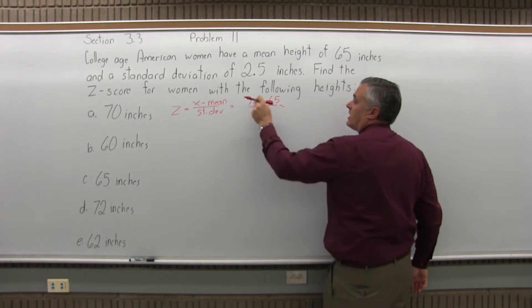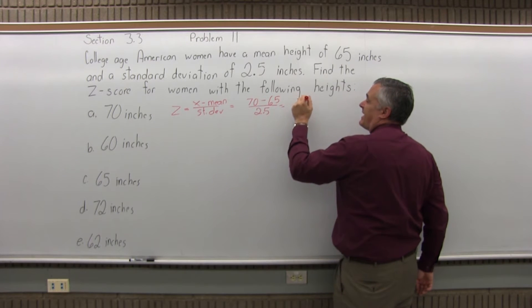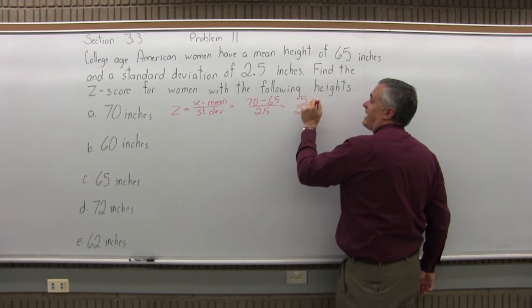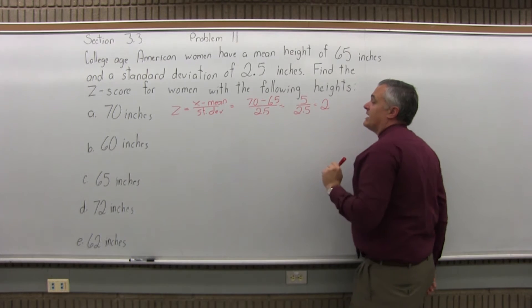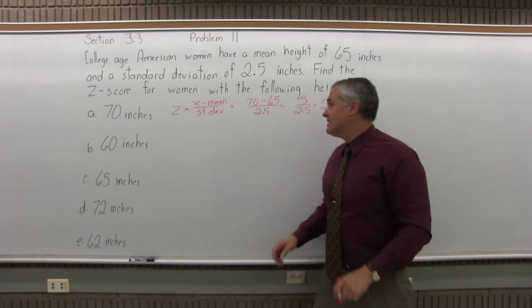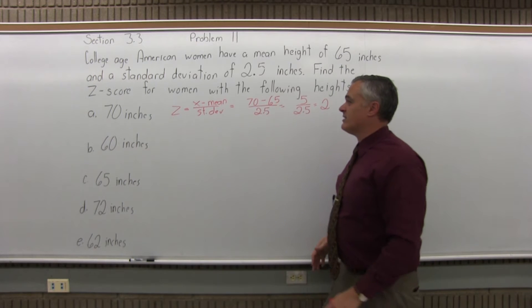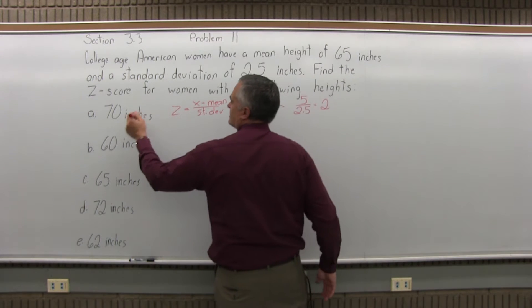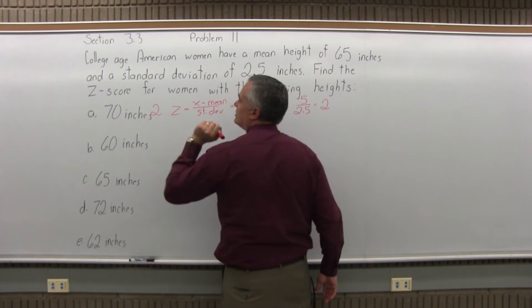So on top, 70 minus 65 is 5, 5 over 2.5. It'll divide to 2. I can see it goes in twice, you could do that on a calculator. So the first answer, the z-score is 2.